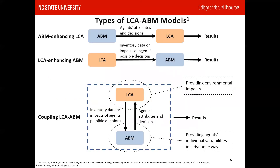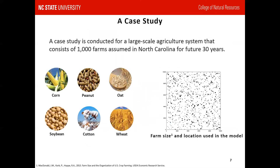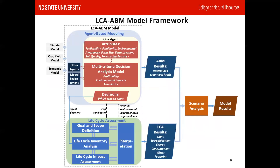In one review paper in 2017, three types of LCA-ABM cooperating modes were identified. The first two are commonly used at the current stage. In our study, we choose the third one: coupling LCA-ABM. It means that the two modules will send information to each other. The LCA module will provide environmental impacts for us, and the ABM module can provide individual information in a dynamic way. In this study, we model a crop cultivation case with 1,000 farms for a future 30 years. Each year, each farm can choose one of six common crops. The right figure here shows the farm size and location used in this model. This is assumed at the current stage but can be further modified if there are any related data.